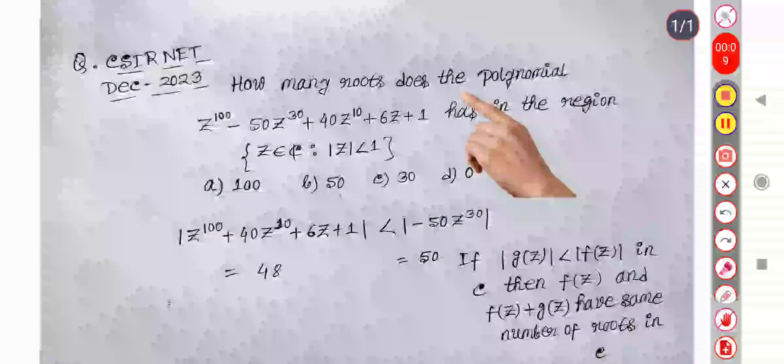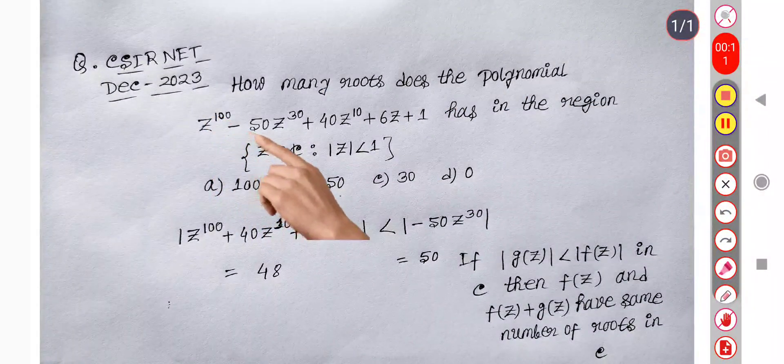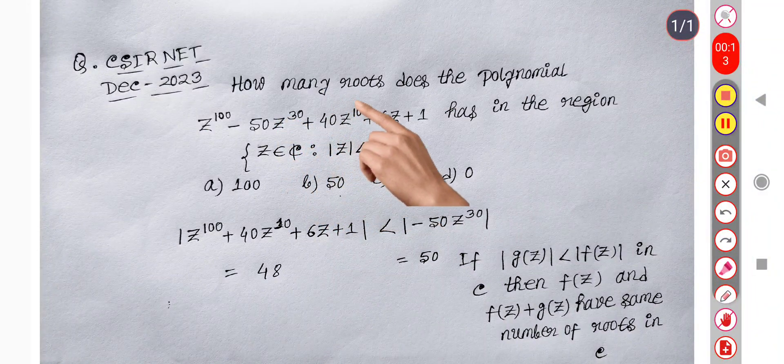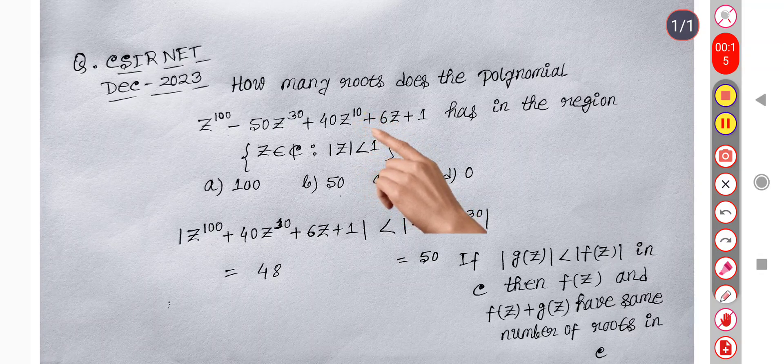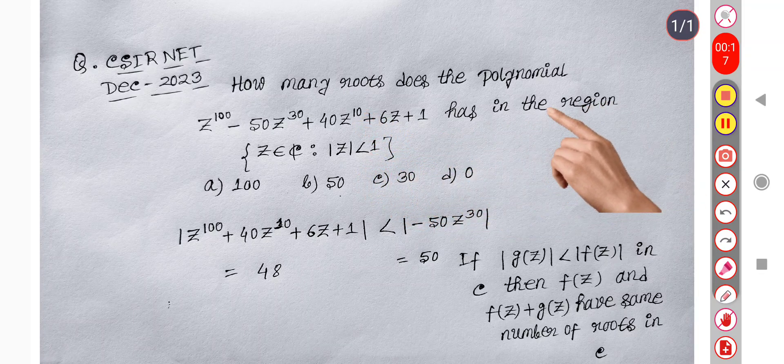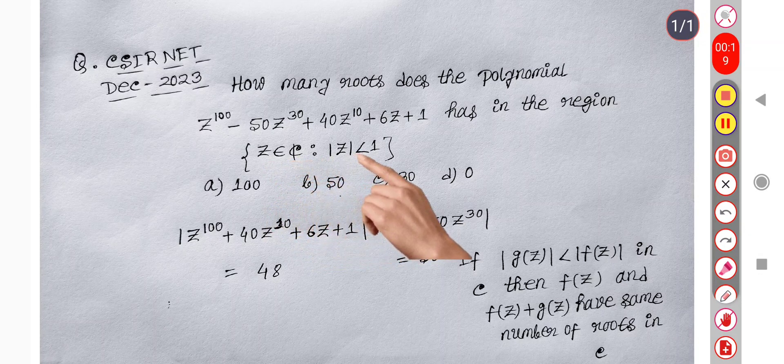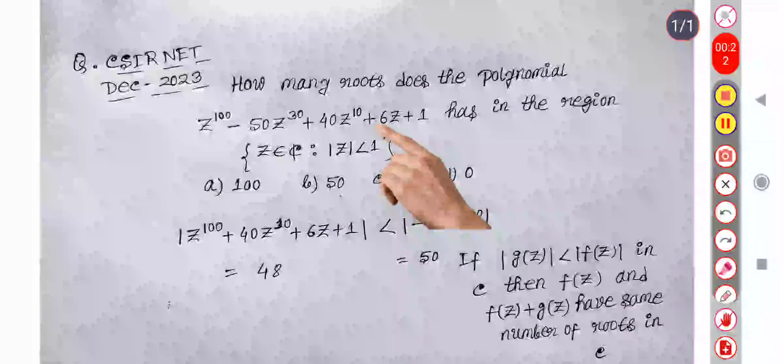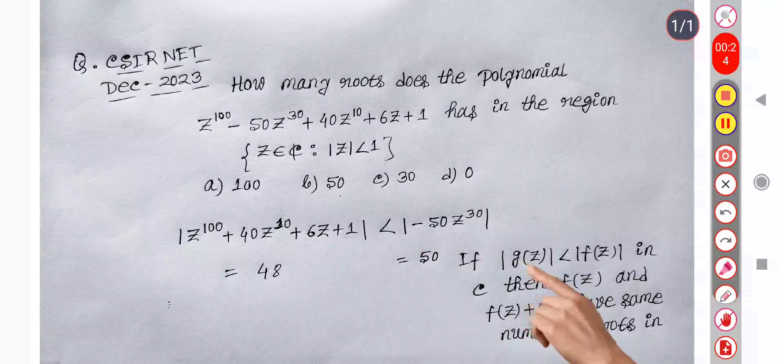How many roots does the polynomial z power 100 minus 50 z power 30 plus 40 z power 10 plus 6z plus 1 have in the region z belongs to C, mod z less than 1? For this type of question, we use Rouché's theorem.